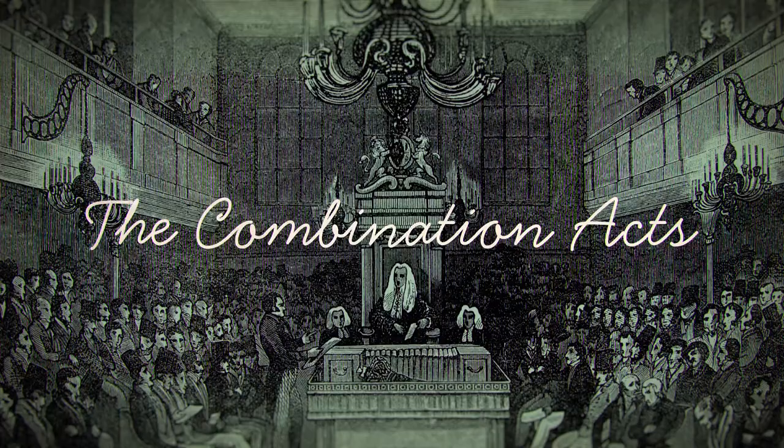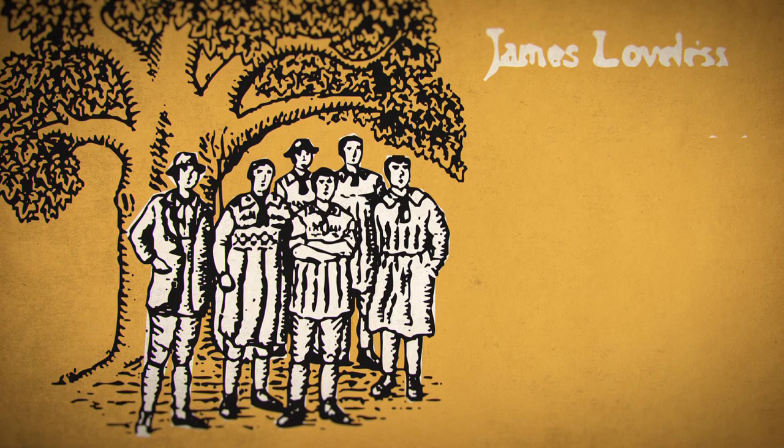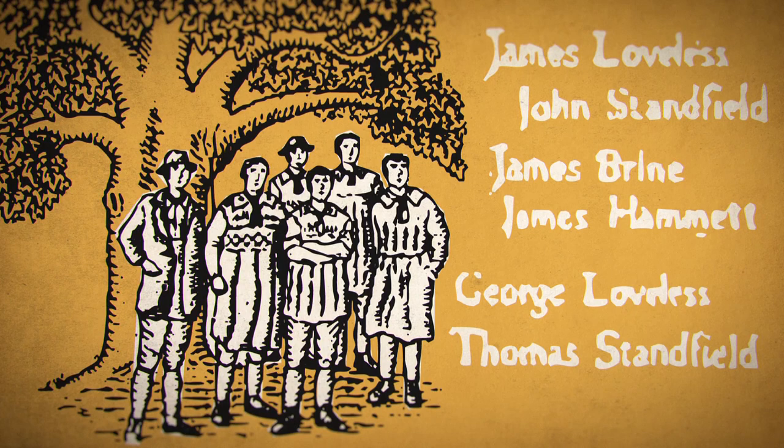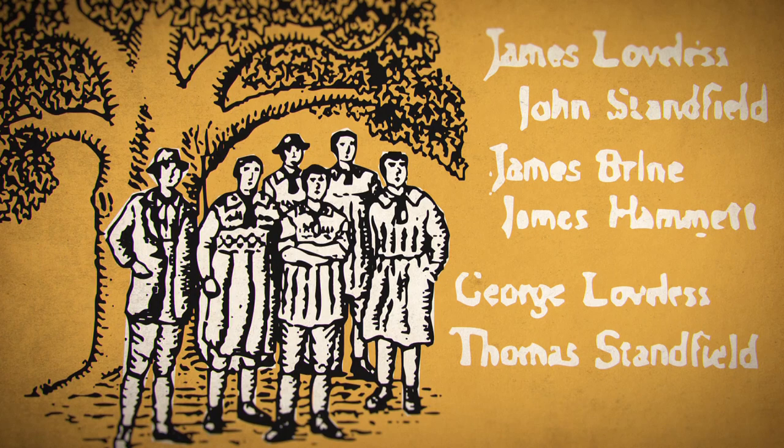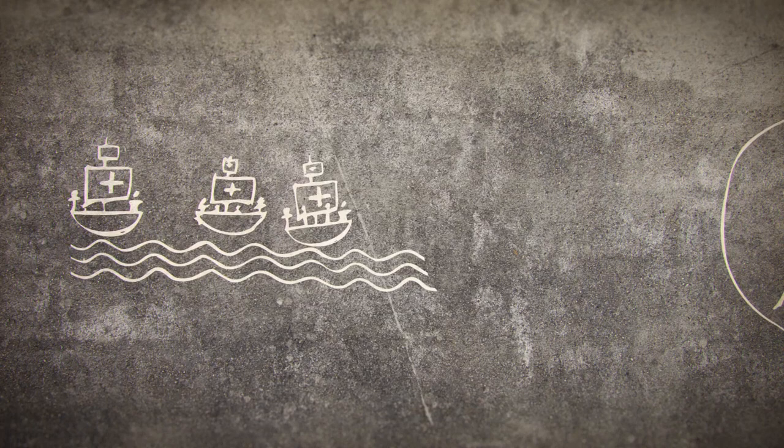By 1800, British law regarded unions as combinations in restraint of trade, and the penalties for trying to form a union were severe. The Tolpuddle Martyrs served as an example. These six farm labourers in Dorset, England formed a friendly society of agricultural labourers in 1832, to pressure employers to stop decreasing their wages. They were arrested, tried, found guilty of swearing a secret oath, and deported to Australia.